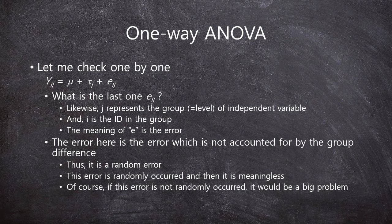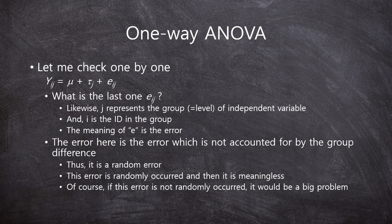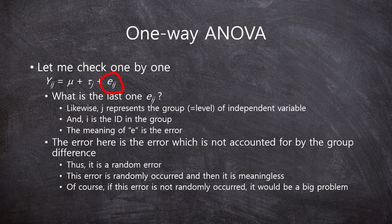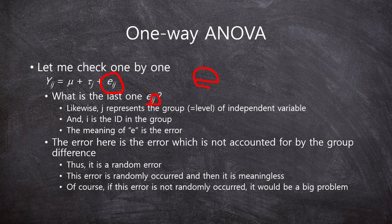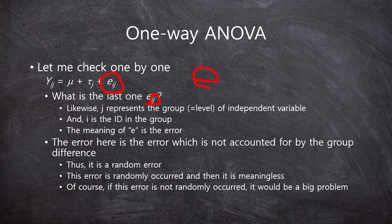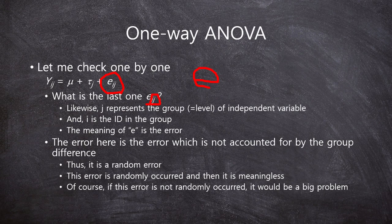That is, last one is e_ij. What is the e_ij? Here, the e means error. Error. And, i, j is the same as in the y_ij. Okay? So, it's nothing. Here, the error. Error means random error. Random error. You know, understand the random error?